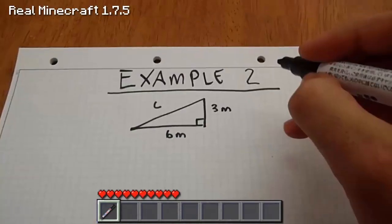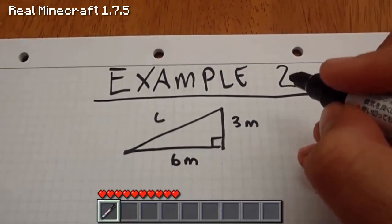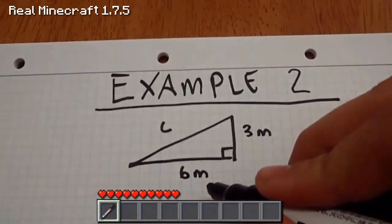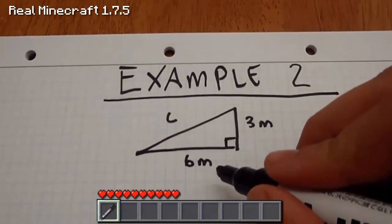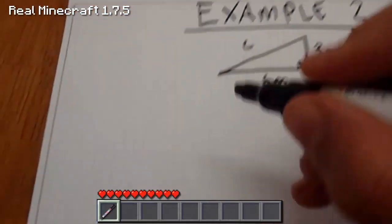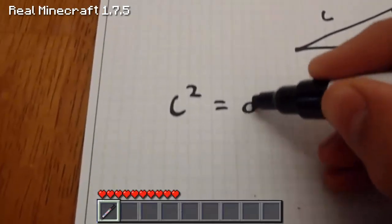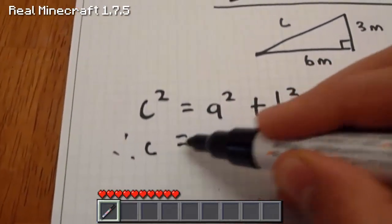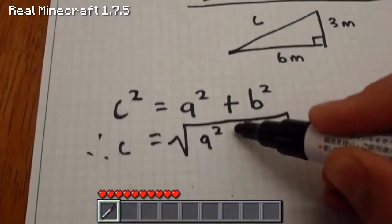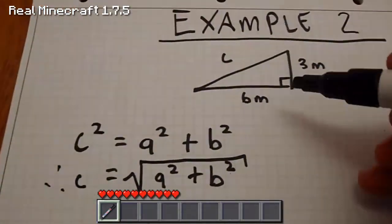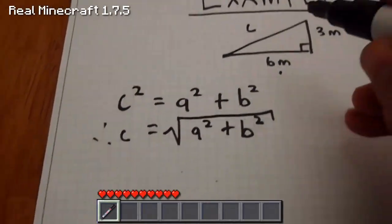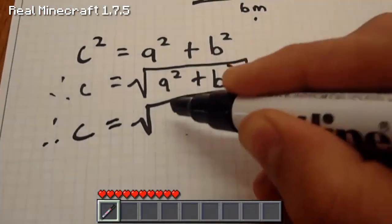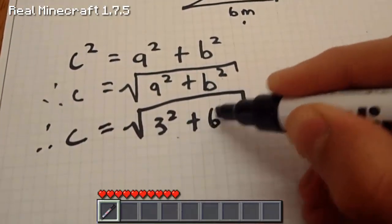Let's get into example number 2, where we know that this right-angled triangle has one side of 3 metres and one side of 6 metres, and we don't know the hypotenuse. We can work this out using the Pythagoras theorem. C squared equals A squared plus B squared, therefore C equals the square root of A squared plus B squared. So C equals the square root of 3 squared plus 6 squared.